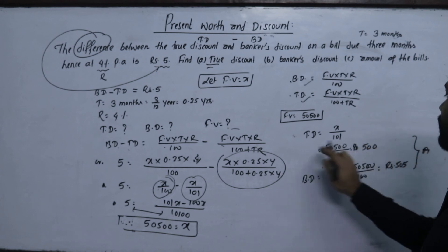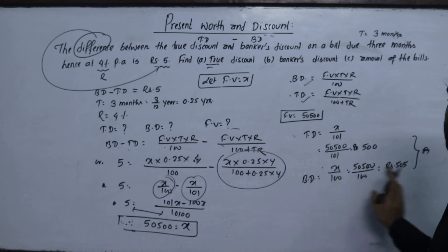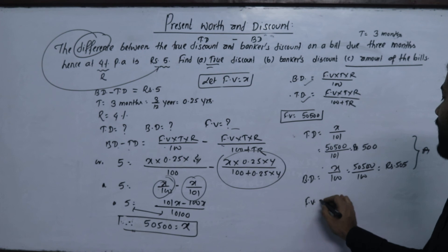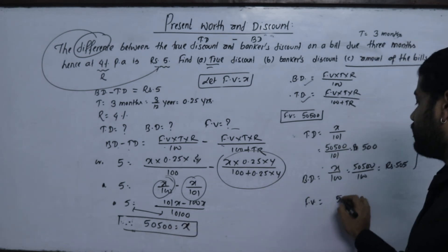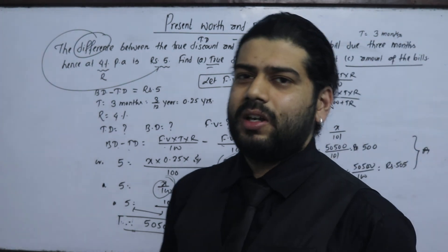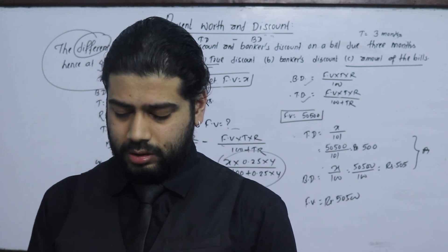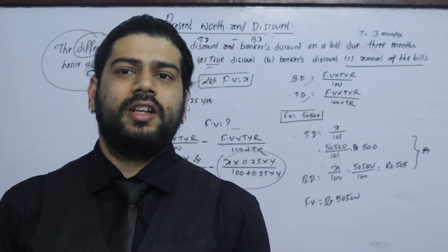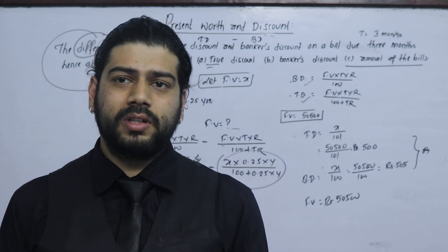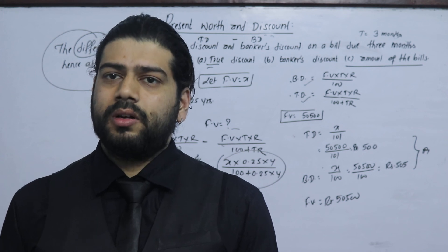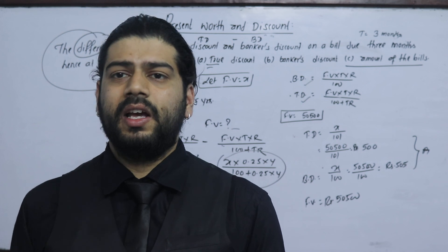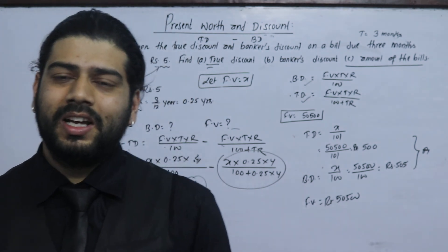To summarize: the parameter values are — true discount, banker's discount Rs. 5, and amount of the bill (face value) x equals Rs. 5500. This is the question solved. The question involves face value, true discount, banker's discount, and banker's gain. Every type of question can be solved using this approach.